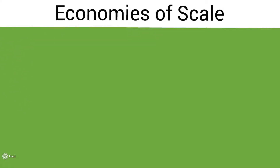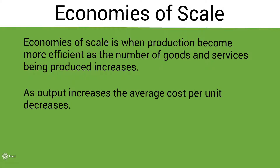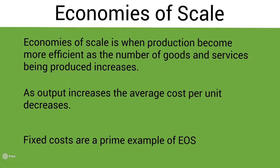Let's look at economies of scale and diseconomies of scale in more detail, starting with economies of scale. Economies of scale is when production becomes more efficient as the number of goods and services produced increases. As output increases, the average cost per unit decreases. Fixed costs are a prime example of economies of scale, because as you increase production, the fixed costs are spread over more units, resulting in the average fixed cost falling and the average total cost falling as well.